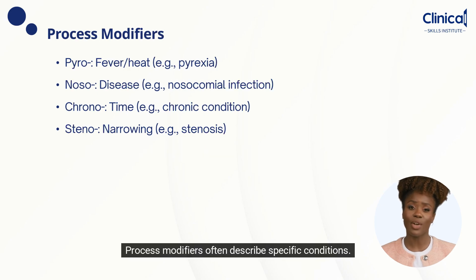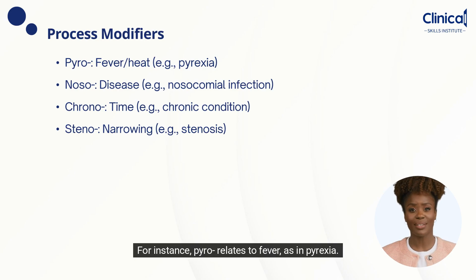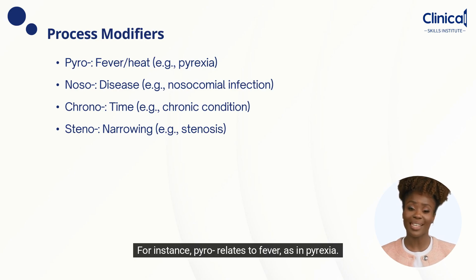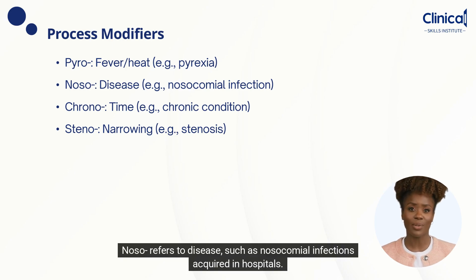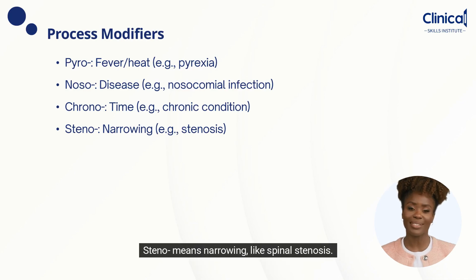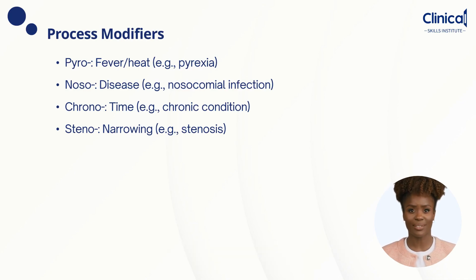Process modifiers often describe specific conditions. For instance, pyro relates to fever, as in pyrexia. Noso refers to disease, such as nosocomial infections acquired in hospitals. Steno means narrowing, like spinal stenosis.